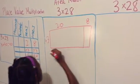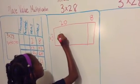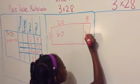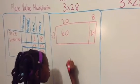We're going to break up the 28 and make 20 and 8. Then we're going to multiply 3 times 20, which equals 60, and 3 times 8, which equals 24.